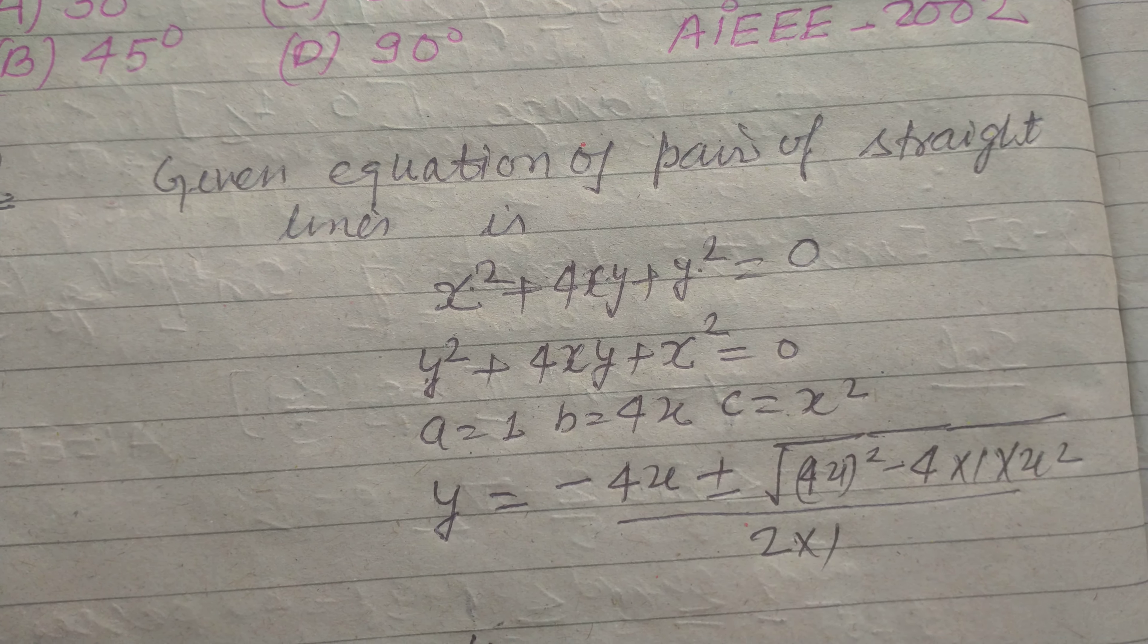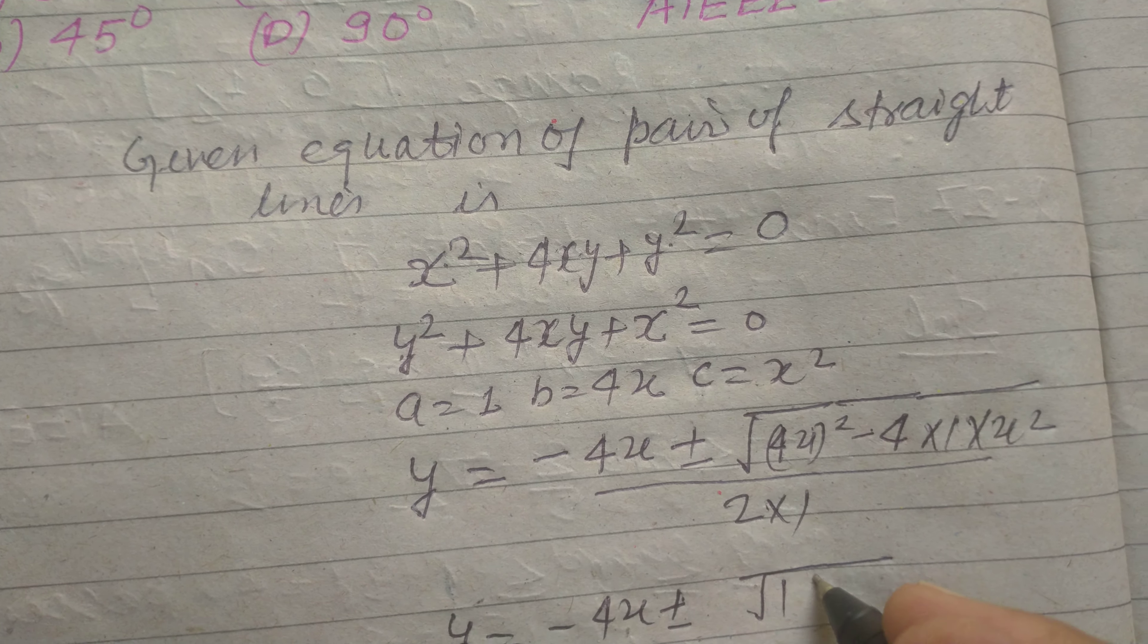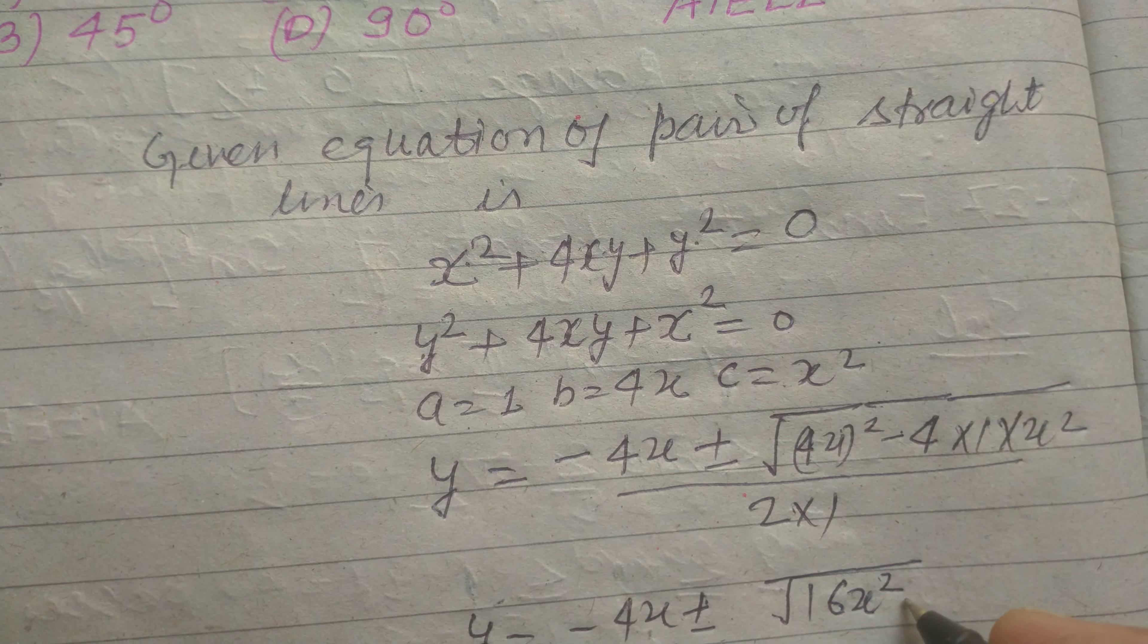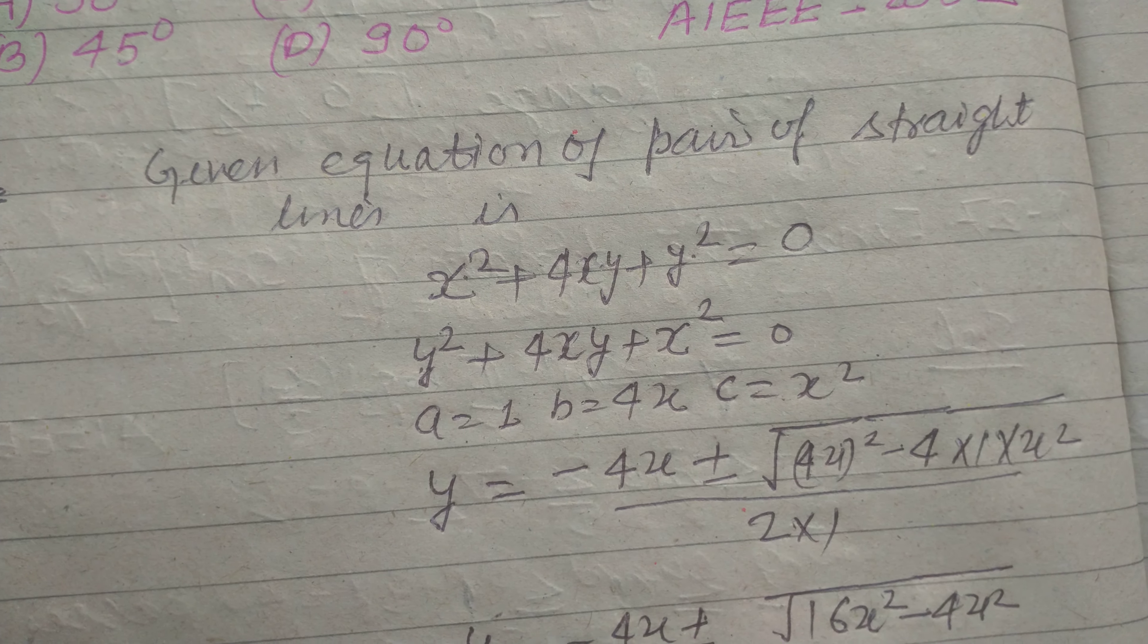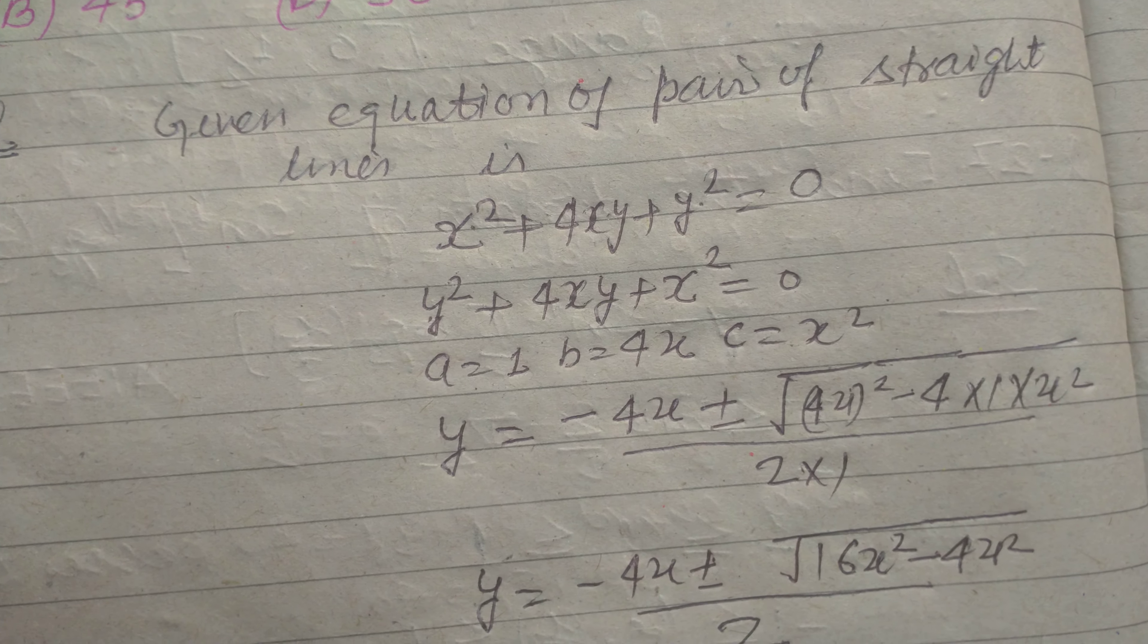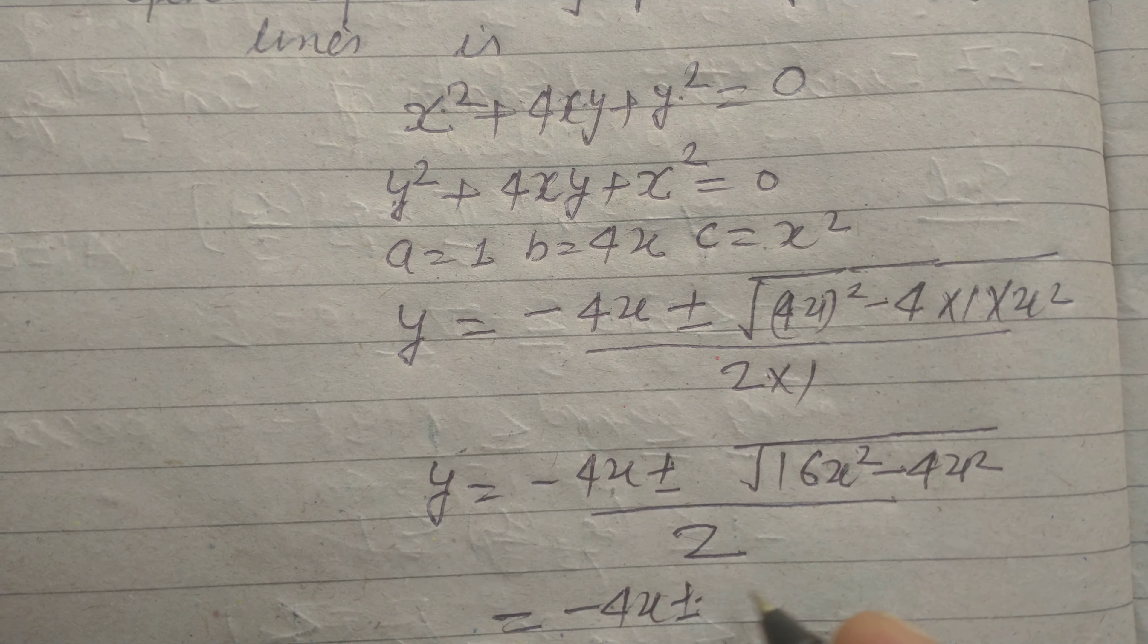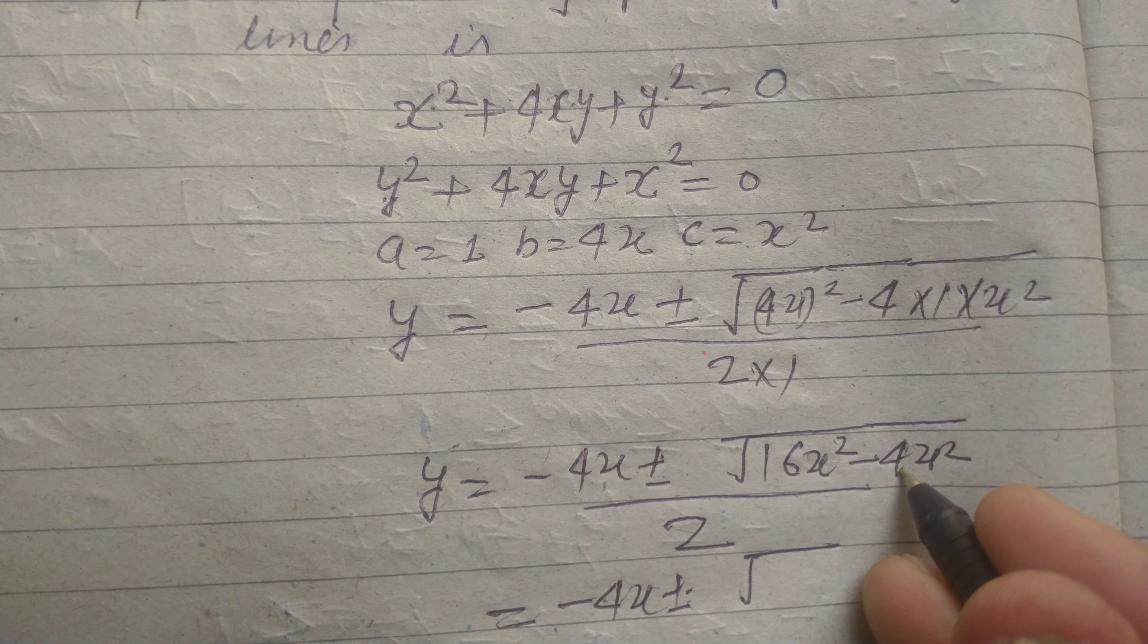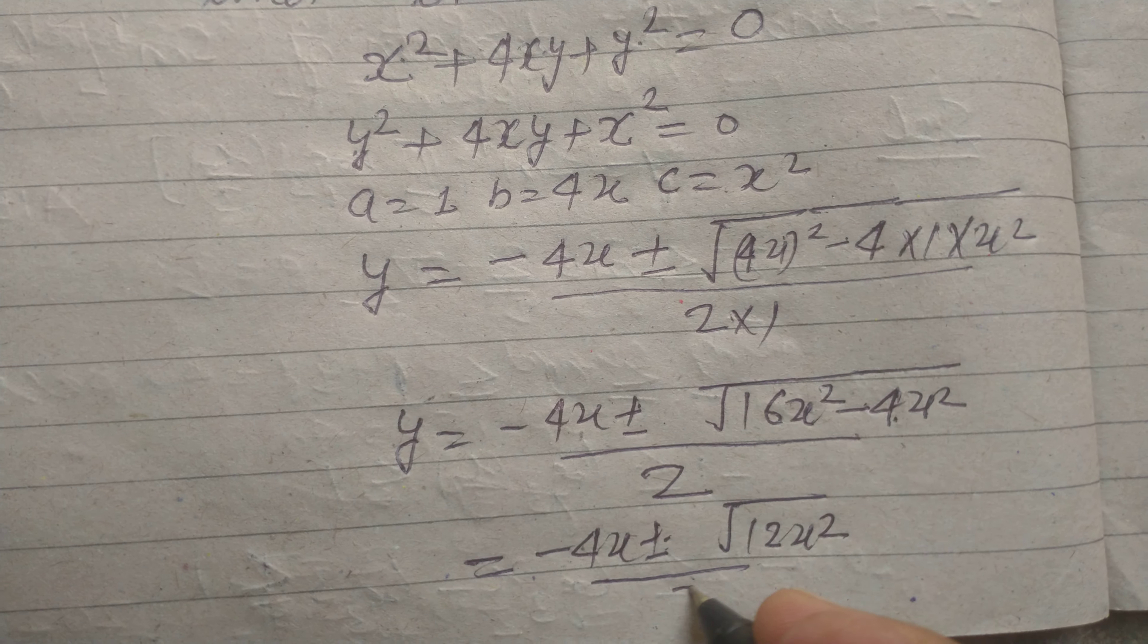Now y = -4x ± √(16x² - 4x²) over 2. So this is -4x ± √(16 - 4) which is 12x² upon 2.